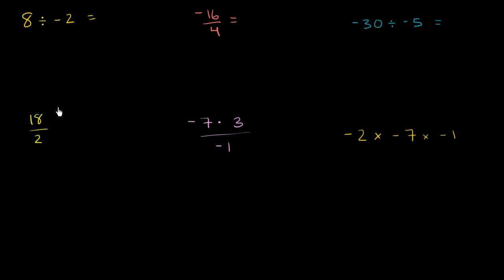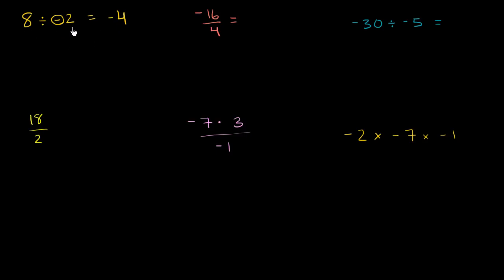Let's apply it — I encourage you to pause this video and try these out yourself, then see if you get the same answer. So 8 divided by negative 2: if I just had 8 divided by 2, that would be a positive 4. But since exactly one of these two numbers is negative, the answer is going to be negative. So 8 divided by negative 2 is negative 4.